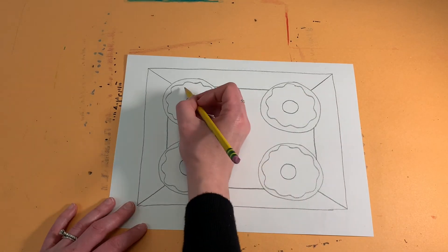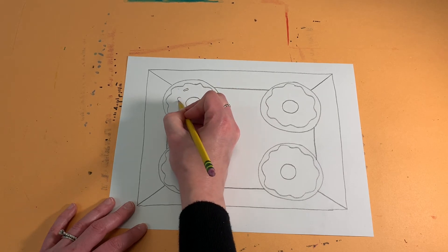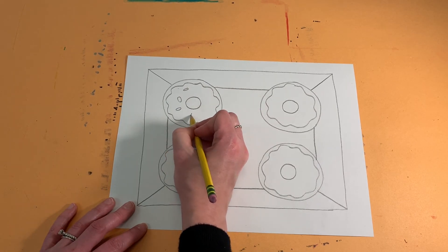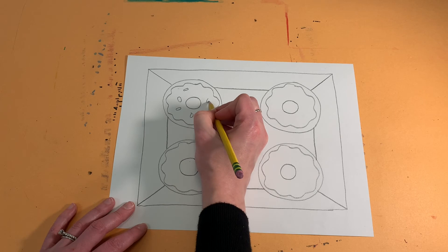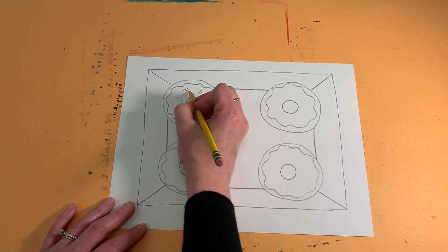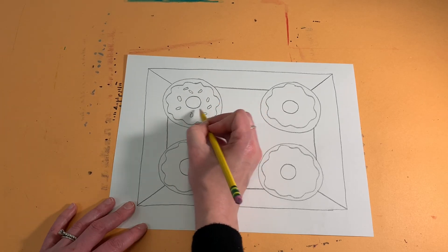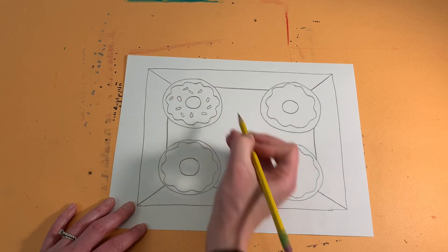All right, so maybe on this one I'll put sprinkles. So I'll use small skinny oval shapes, kind of maybe all facing different directions to make all the sprinkles.